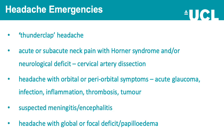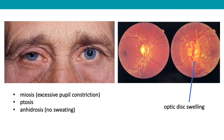Headache emergencies include: suspected thunderclap headache; acute or subacute neck pain with Horner syndrome and/or neurological deficit — concerning for cervical artery dissection (one patient dissected their vertebral artery whilst swimming); headache with orbital or periorbital symptoms such as acute glaucoma, infection, inflammation, thrombosis, or tumor; suspected meningitis and encephalitis; and headache with global or focal deficits or papilledema. A reminder of Horner syndrome: the 'osis sisters' — miosis (excessive pupil constriction), ptosis, and anhidrosis (no sweating).